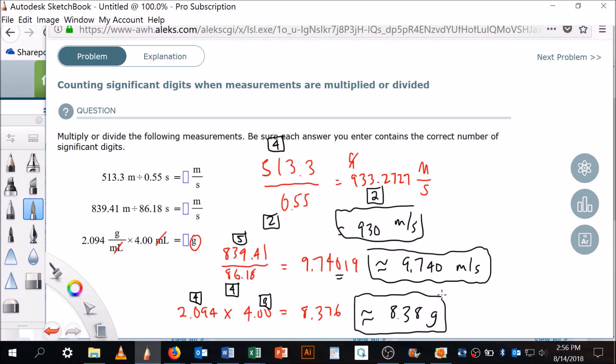All right, so that's how we count significant digits when measurements are multiplied or divided. I hope that's helpful.